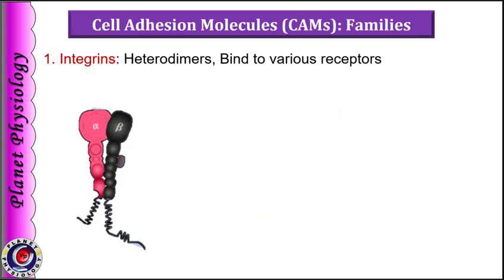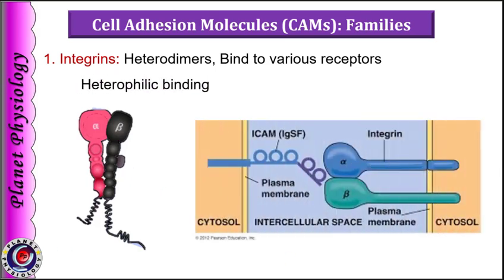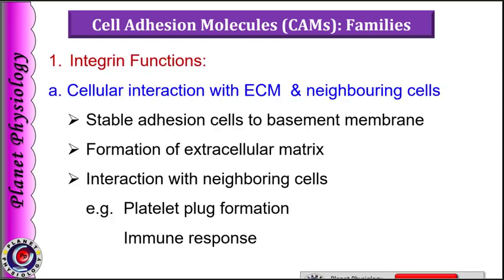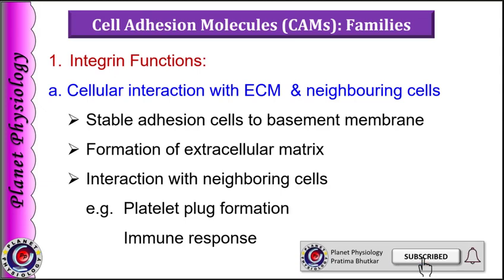First are integrins. These are heterodimers, meaning they are made up of two separate subunits, alpha and beta. They interact with a variety of receptors, meaning they show heterophilic binding. In this picture, the interaction between integrin and an Ig superfamily protein is shown. Integrins perform two main functions.